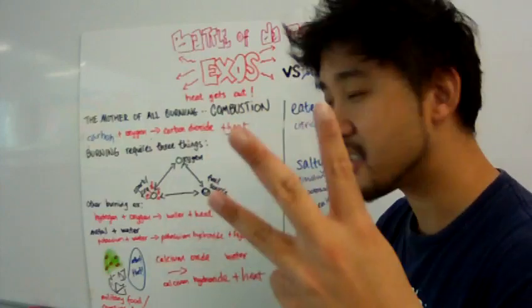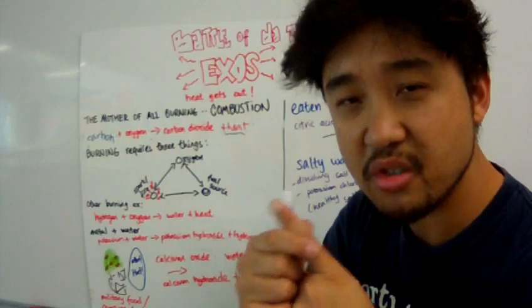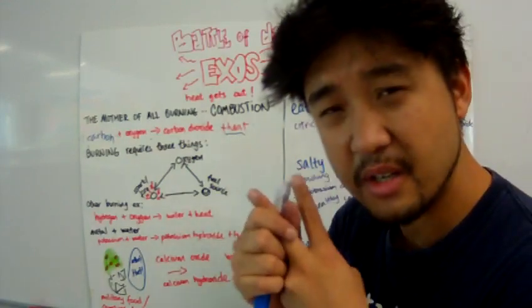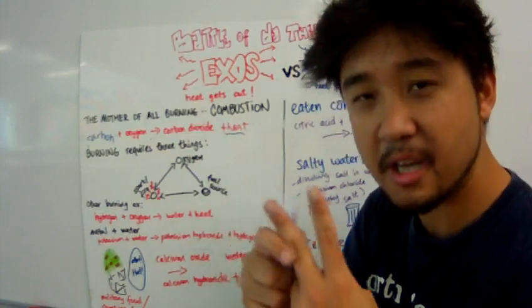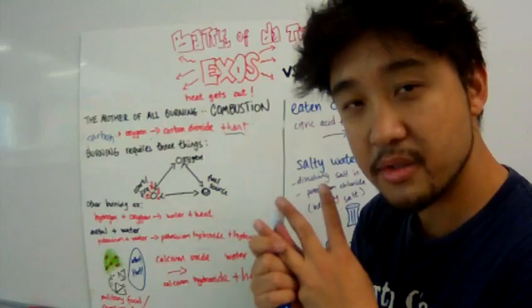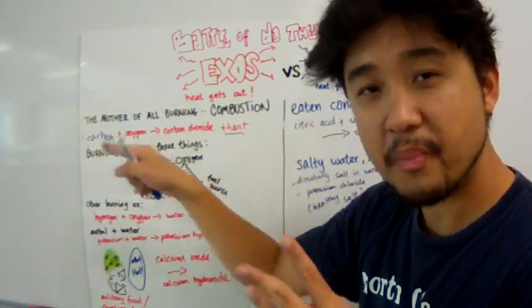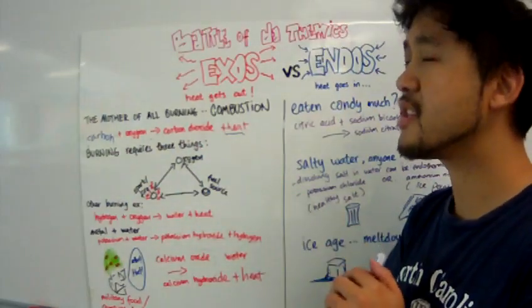So here is burning. Burning needs three things. Remember that. One, oxygen. You need oxygen source. Two, a fire source or spark source to ignite and start chemical reaction. Three, a fuel source like carbon, coal, propane, methane. That is what you need.